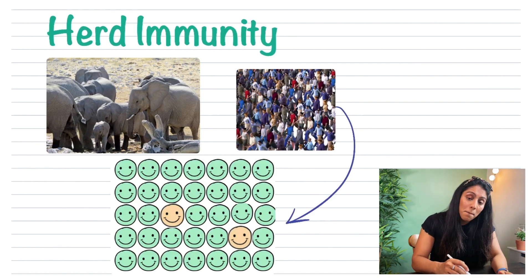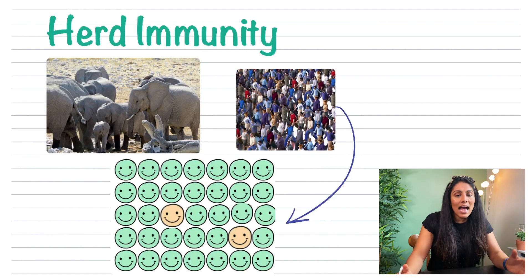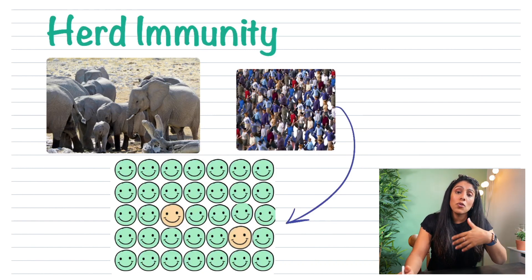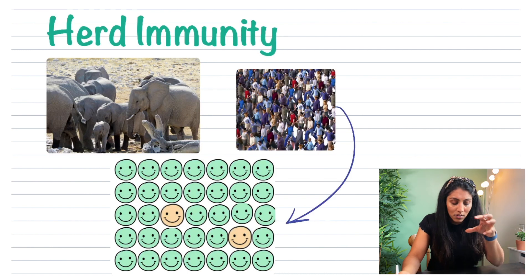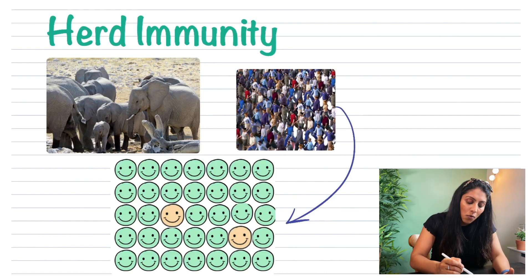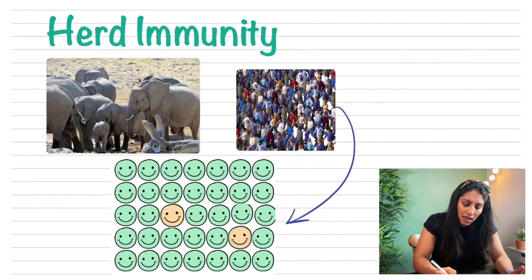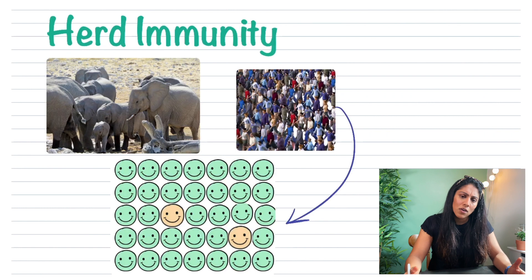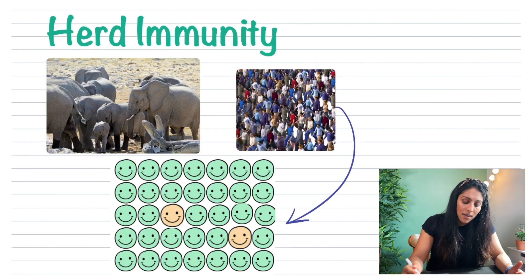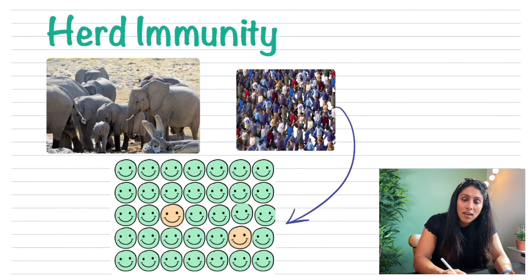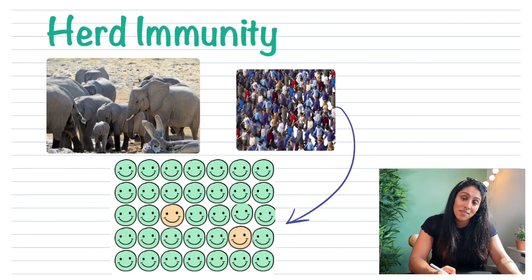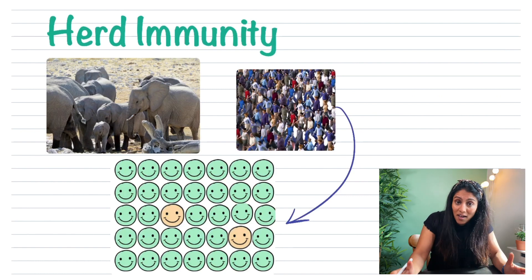Herd immunity is when most of the population is vaccinated and it protects the minorities of people who were not vaccinated. In my picture of smiley faces, all the people in green have been vaccinated. But there are two people who didn't get vaccinated — maybe they came from a different country with different laws, or they missed their appointment. Herd immunity means it's very unlikely for them to get ill, because all the people around them have no way of passing the virus since they are immune. That's how it protects the minorities.